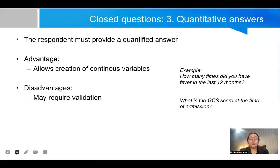When closed questions give you quantitative answers, they give you a lot of continuous variables. They give you a particular answer like how many times did you have fever in the last 12 months or what is the GCS score at the time of admission. So the respondent will give only a particular answer and it allows the creation of continuous variables.